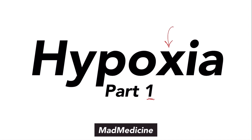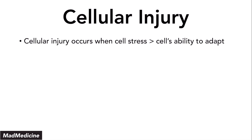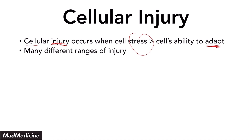Let's discuss hypoxia by first discussing the basic concept of cellular injury. What you need to remember is our cells are able to handle a lot of stress. They are very resilient, but when the amount of stress exceeds the ability to adapt to that stress, our cells get injured — when you have too much stress for the level they can handle, meaning they can't adapt to it.